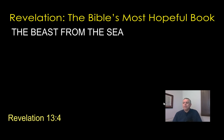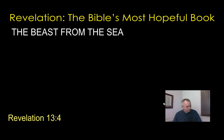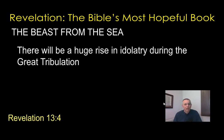Verse 4: 'People worshipped the dragon because he had given authority to the beast, and they also worshipped the beast and asked, who is like the beast? Who can wage war against it?' This reinforces why I believe the fatal wound is a military defeat rather than a physical head wound — because the question is 'who can wage war against it?' suggesting a military comeback. During this period there will be a huge rise in idolatry during the Great Tribulation — not metaphorical idols, but physical idols of wood, stone, brick, and metal. People will literally bow down and worship images of the Antichrist.